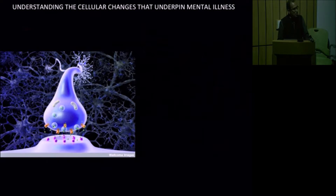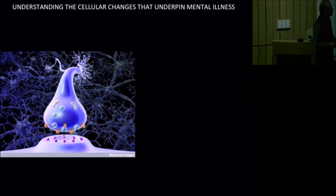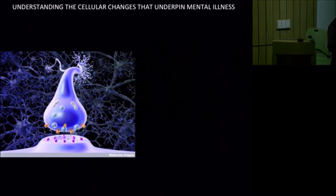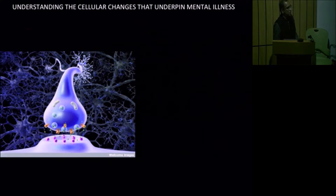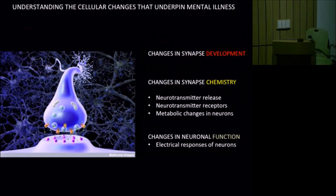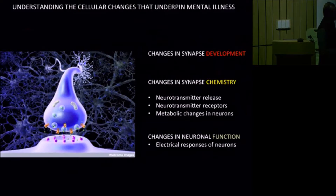One way of thinking about mental illness at this level is to ask what abnormalities exist in the delivery of a signal by the presynaptic neuron and the receiving of that signal by the postsynaptic cell. In this program, we plan to analyze this in considerable detail to understand the differences between normal humans and patients with mental illness. We want to ask if there are differences in the way synapses develop and their structure, differences in the chemistry of the synapse, defects in neurotransmitter release, differences in the types and number of receptors in the postsynaptic membrane, and any metabolic differences between neurons in normal persons and those with mental illness.